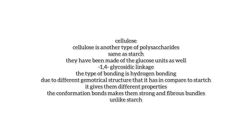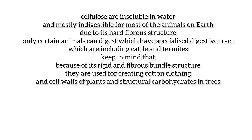Cellulose is another type of polysaccharide. Like starch, it is made of glucose units, but they are bonded through beta-1,4 glycosidic linkages with hydrogen bonding. Due to its different geometrical structure compared to starch, it has different properties — the conformation bonds make cellulose strong and fibrous.